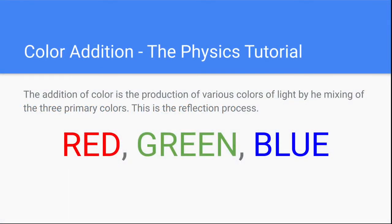The definition of color addition from the Physics Tutorial website is: the addition of color is the production of various colors of light by the mix of three primary colors. This is the reflection process. Those primary colors are red, green, and blue.